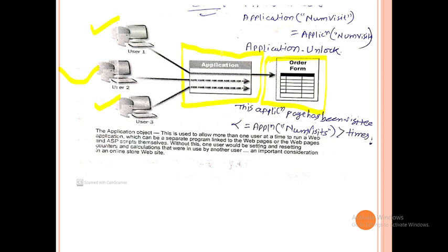If user1 accesses an order form, it will be populated and a lock method will be applied. The counter variable is created and locked by user1, so user2 cannot access it. Once user1 is finished, the unlock method is called.